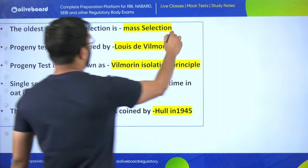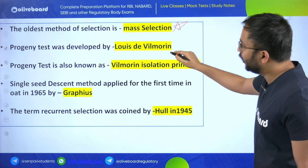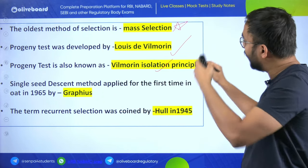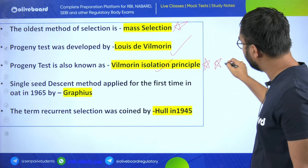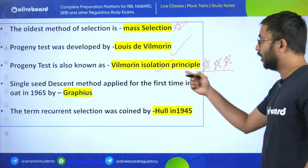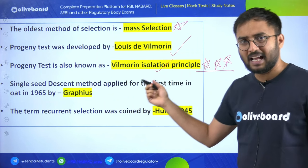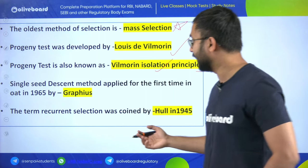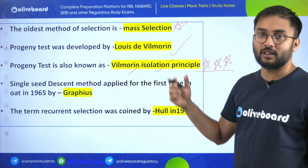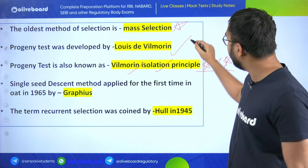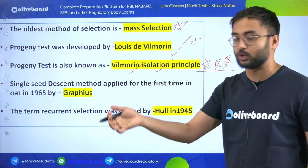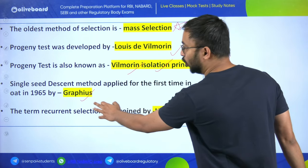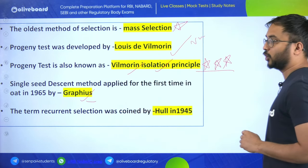The oldest method of selection is mass selection. Progeny test was developed by Louis de Vilmorin. Progeny test is also known as the Vilmorin isolation principle - this is a previous year question asked in different agriculture officers exams. Single seed descent method was applied for the first time in oat in 1965 by Grafius.